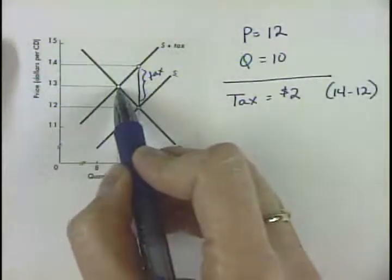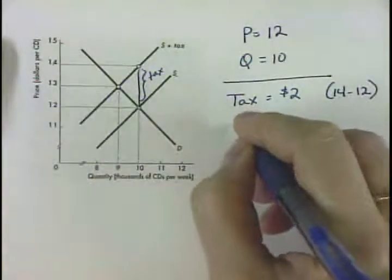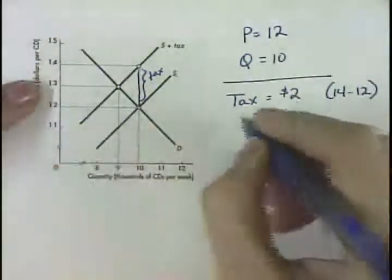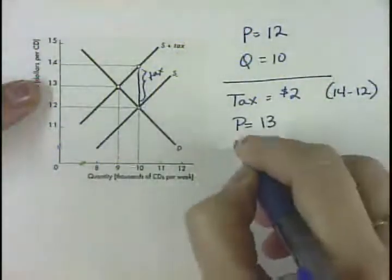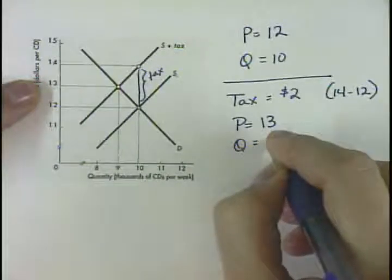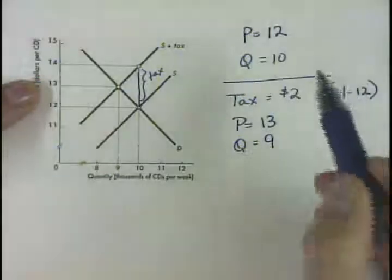the new equilibrium is going to be right here. Our new equilibrium is a higher price. The price went up to $13, and the equilibrium quantity went down to 9. So what this is telling us is...